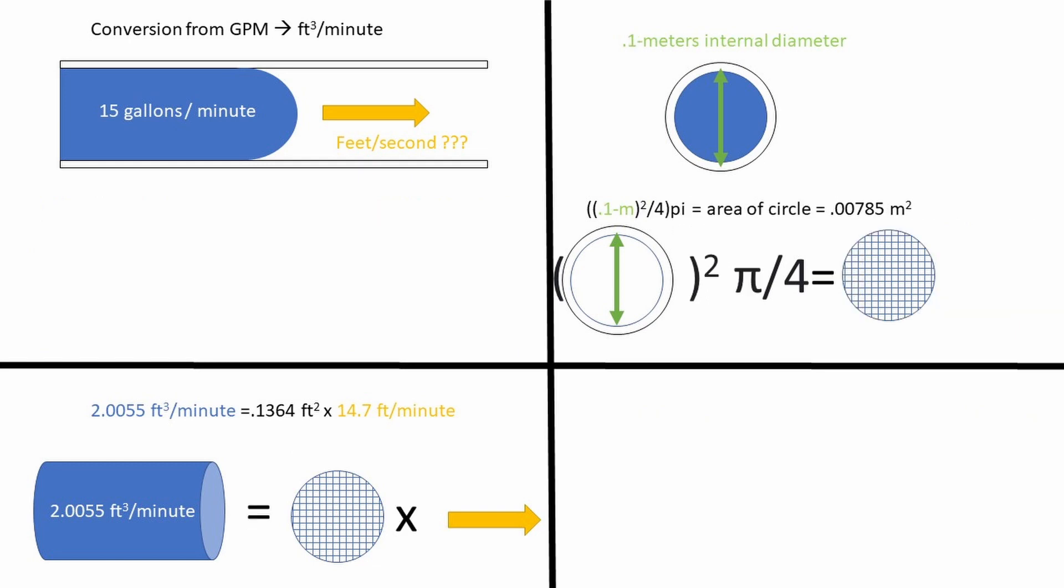Now, let's say we want to find the volumetric flow rate in this situation. All you have to do is take the cross-sectional area times the velocity, and we get the volumetric flow rate, as you can see in the bottom left corner.